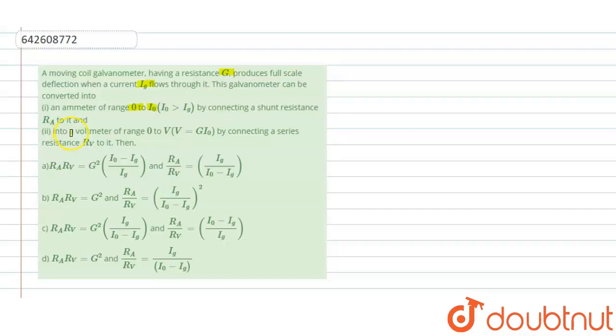By connecting a shunt resistance of RA to it. Second, into a voltmeter. So they have given basically a conversion of galvanometer into an ammeter and the voltmeter, and they have specified the corresponding values also. So based on this, we need to solve the problem and we need to choose which of the options A, B, C or D is correct.